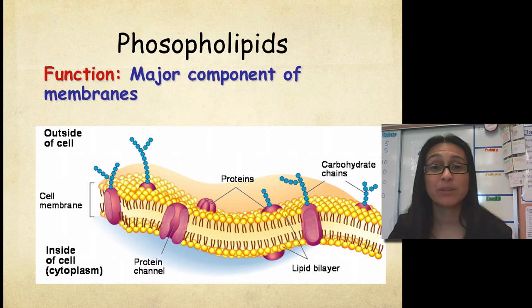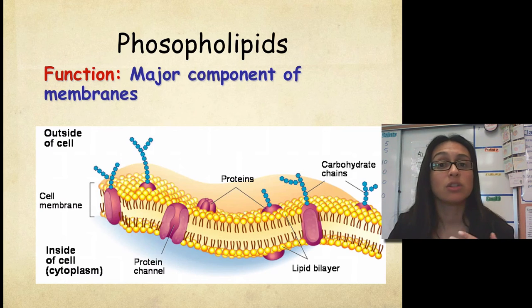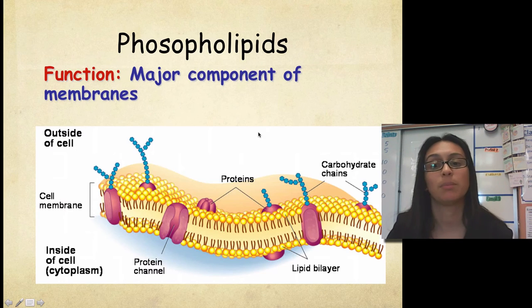So it builds this strong barrier around the cell, and it also, because of its unique structure, controls what goes in and out of the cell. So very, very important, and cells basically wouldn't be able to exist without these phospholipids.